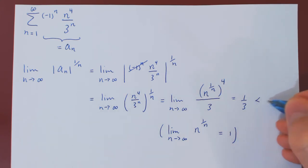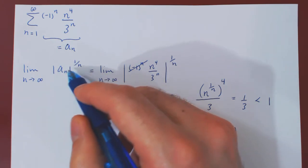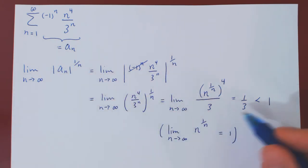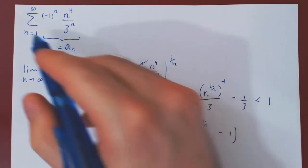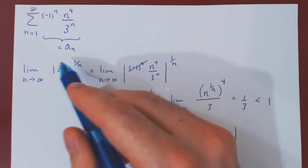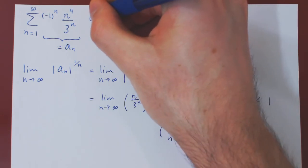This is clearly strictly less than 1, and if the limit of the nth root of a_n in absolute value, as n tends to infinity, is strictly less than 1, the root test says that the corresponding series, so the series of a_n from some point on to infinity, converges absolutely.